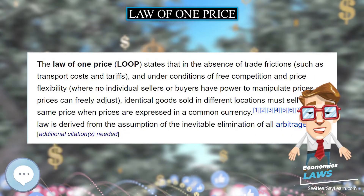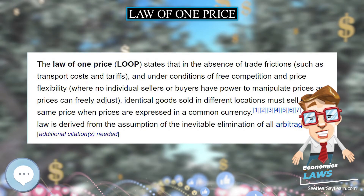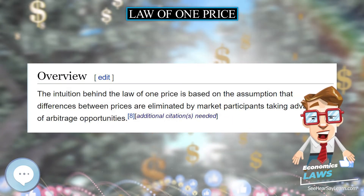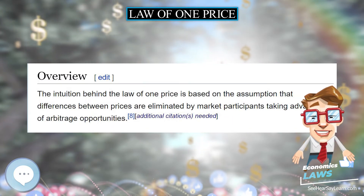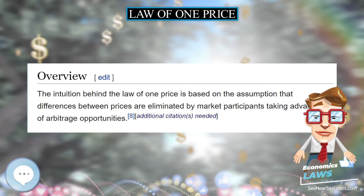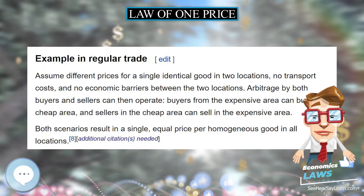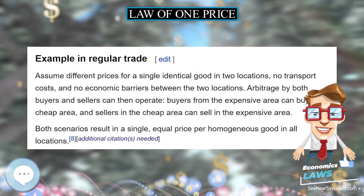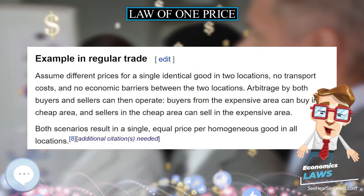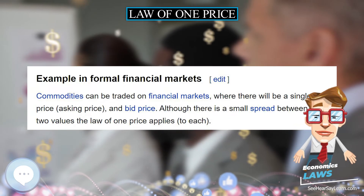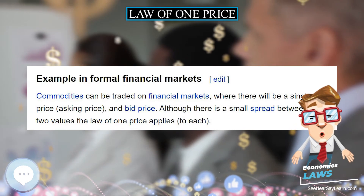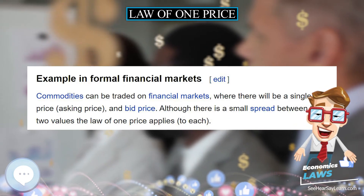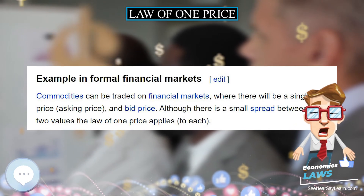In formal financial markets, commodities can be traded on financial markets where there will be a single offer price, asking price, and bid price. Although there is a small spread between these two values, the Law of One Price applies to each.